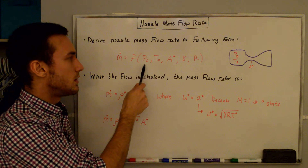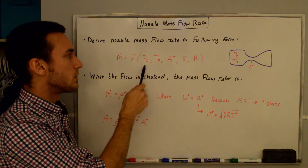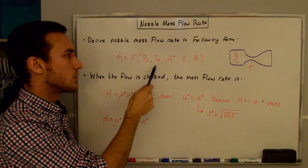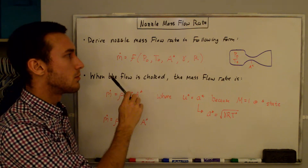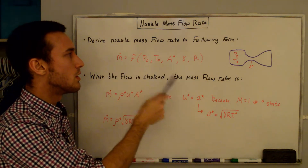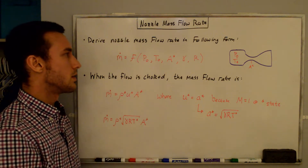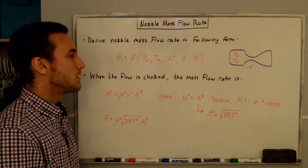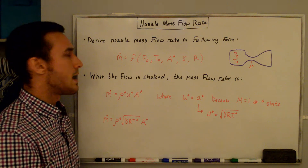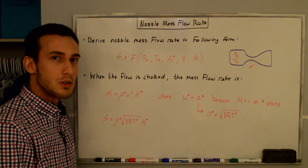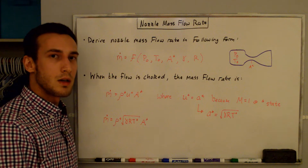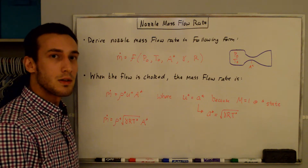You'll usually find the reservoir stagnation pressure, stagnation temperature, and the throat area online, so you can plug these into the equation that we're going to derive and you'll easily be able to get a mass flow rate through the nozzle or through the engine that actually makes a lot of sense.